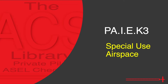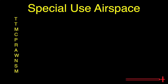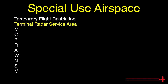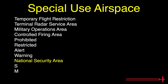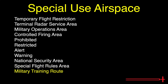We will use a kind of weird acronym: T.T. McPrawn's M. That is, Temporary Flight Restriction, Terminal Radar Service Area, Military Operation Area, Controlled Firing Area, Prohibited, Restricted, Alert, Warning, National Security Area, Special Flight Rules Area, and Military Training Routes.